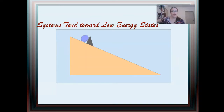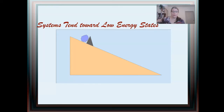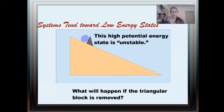Fundamentally, this is because systems tend towards the low energy state. Take this simple system: a ball on a ramp with a block in front of it. This has high potential energy due to gravitational attraction to the ground, and that high potential energy state is unstable. If I remove the block, the system will tend towards the low energy state — the ball will roll down the hill, turning potential energy into kinetic energy until it stops due to friction.